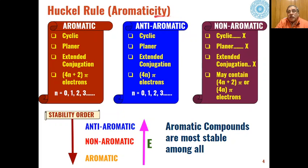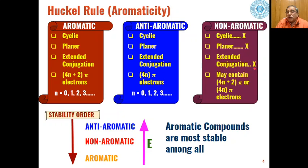Anti-aromatic compounds are those where the first three conditions are met — cyclic, planar, and extended conjugation — but they have 4n pi electrons instead of 4n+2 pi electrons. Non-aromatic compounds do not follow any of these four conditions: either they are not cyclic, not planar, conjugation is not uniform, or they may have 4n or 4n+2 pi electrons but any one or all of the conditions are not met.